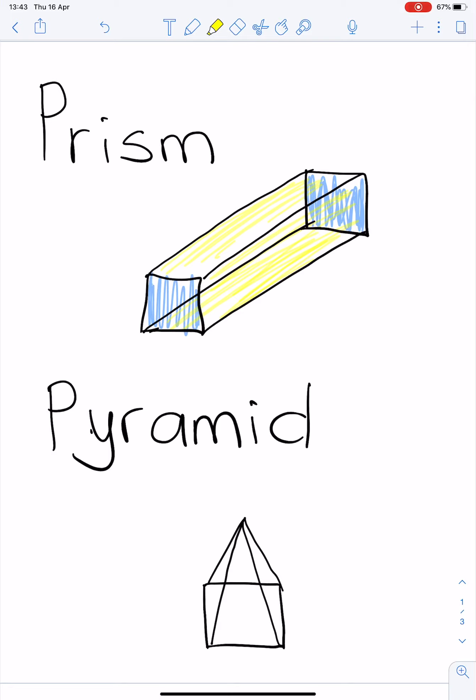A pyramid is named by its base. So, this is a square pyramid. And you'll notice the difference between the pyramid and the prism is that the prism is joined by rectangles. The pyramid is joined by triangles.